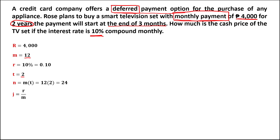For the interest per period, we have the rate over M — so 0.10 over 12 — giving us an interest per period of 0.00833. To find the periods of deferral K, since the payment starts at the end of 3 months, we use the formula: always minus 1, so 3 minus 1. Therefore, the periods of deferral K is equal to 2.